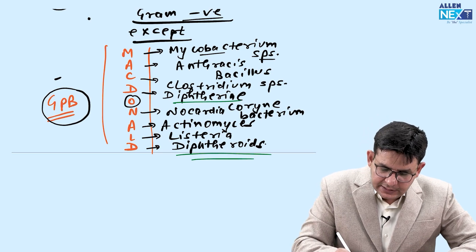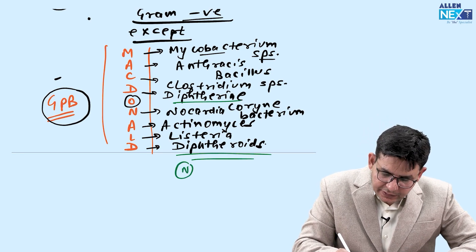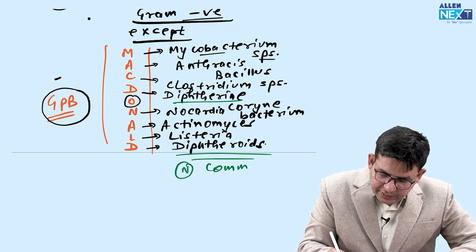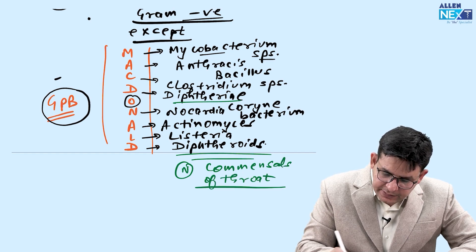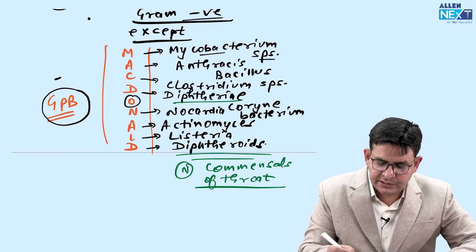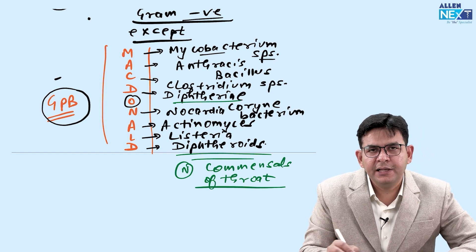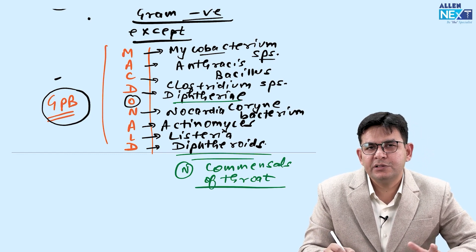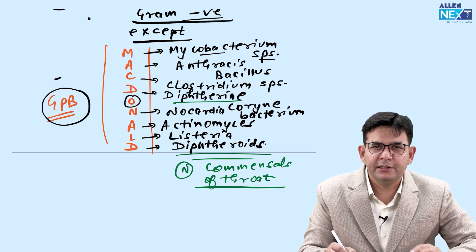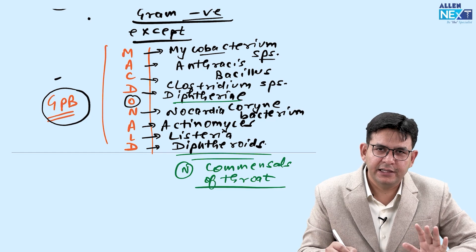If somebody asks the difference between Diphtheroids and Diphtheria: Diphtheroids are normal commensals found in the throat — they are the normal commensal of the throat. Diphtheria is a pathogenic one that causes diphtheria disease in the pediatric age group.